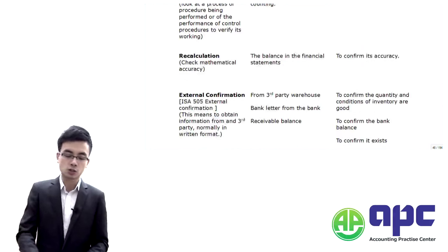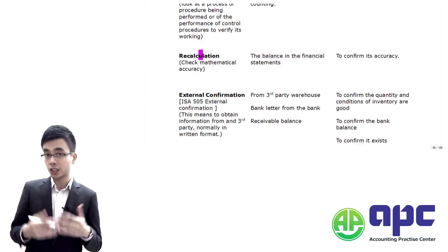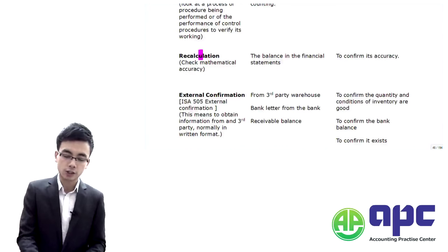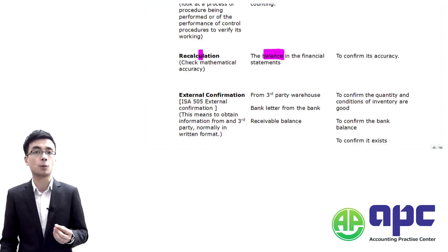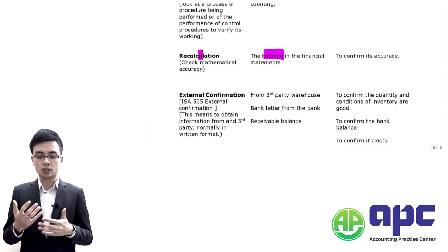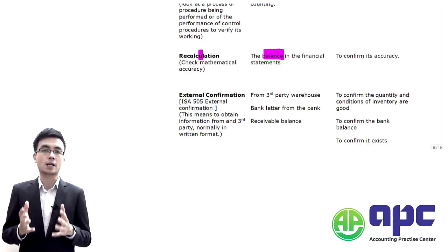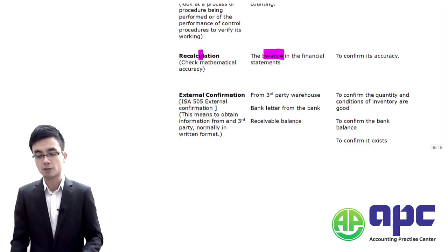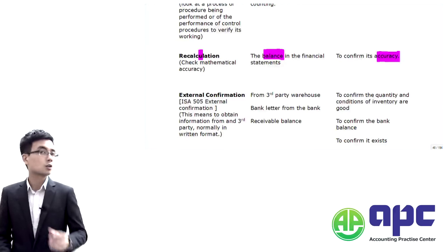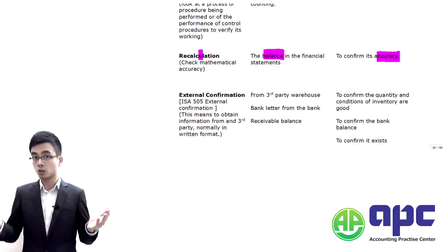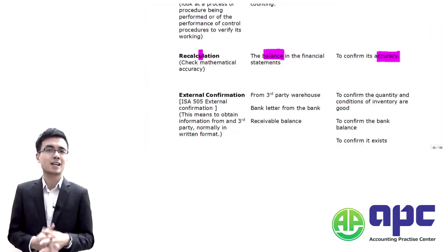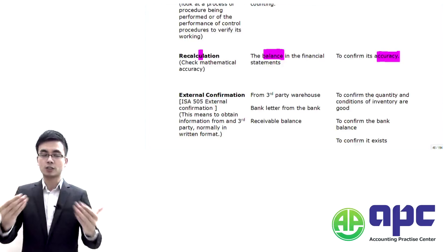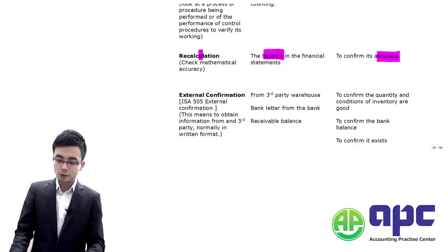U stands for recalculation — we recalculate balances using our computer or calculator. For example, if there has been impairment of assets during the year, we recalculate the impairment loss by comparing the carrying value with the recoverable amount per IAS 36. By doing this calculation, we confirm its accuracy. We also recalculate the tax expense, which is complicated — taking taxable profit times the corporation tax rate with various adjustments — to confirm accuracy.